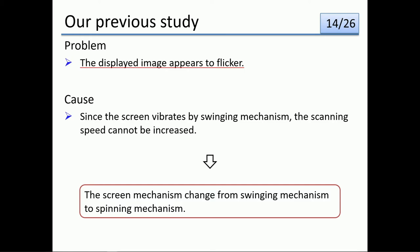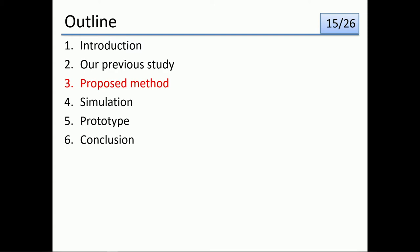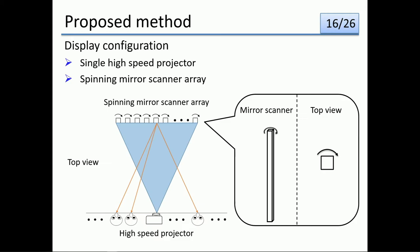However, there is a problem with our previous study in that the displayed image flickers. The reason is that the screen vibrates due to the swinging mechanism and the scanning speed cannot be increased. Therefore, the screen mechanism is changed from a swinging mechanism to a spinning mechanism, so that the screen does not perform reciprocating motion and the vibration of the screen can be reduced. In this study, we propose a 3D display using a single high-speed projector and a spinning mirror scanner array.